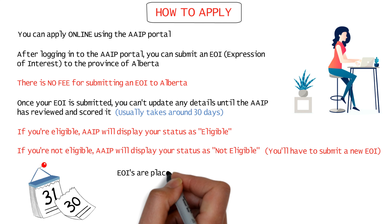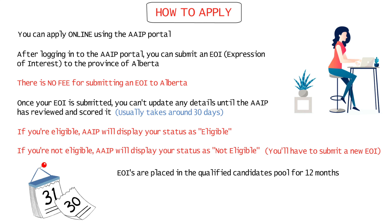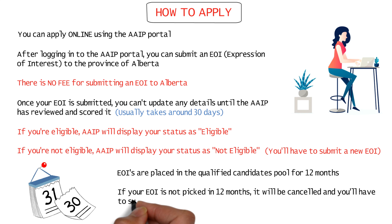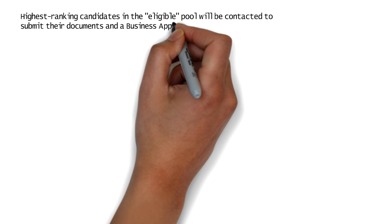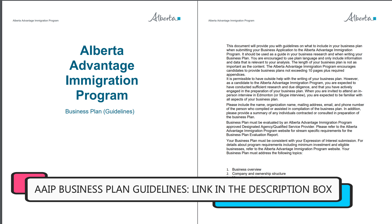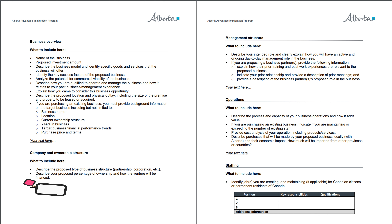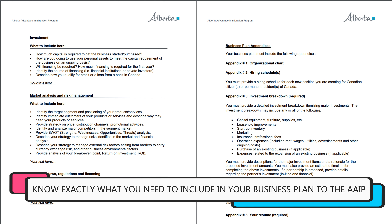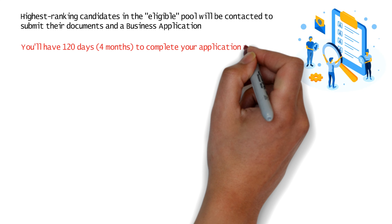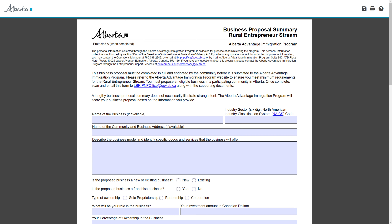EOIs are placed in the pool of qualified candidates for a period of 12 months from the date of their original submission. If your EOI is not selected in this 12-month period, it will be cancelled and you will have to submit a new EOI. Highest-ranking candidates in the pool will be requested to submit their documents and a business application. You'll have 120 days — four whole months — to complete your application and submit the required documents.